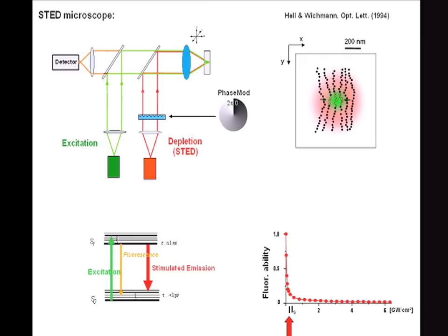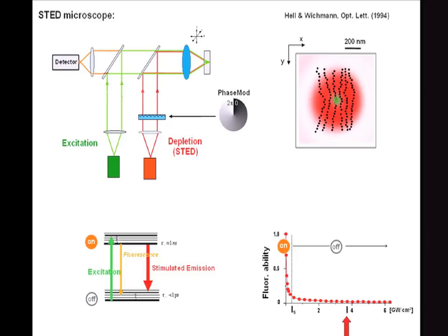If you measure or calculate the fluorescence probability as a function of the intensity of the stimulating beam, you will see that this is a sort of exponential function. You can define a threshold: once the intensity of the STED beam is beyond that threshold, you can say that fluorescence has been turned off. In order to turn off more molecules in the focal region, we increase the intensity of the stimulating beam. Then fewer molecules will be left emitting — we see fluorescence from fewer molecules, therefore more selectively in space, and as a result we can fundamentally overcome the diffraction barrier.